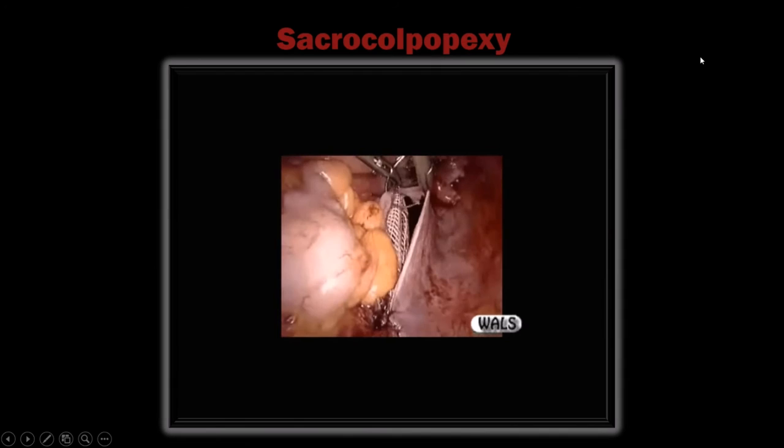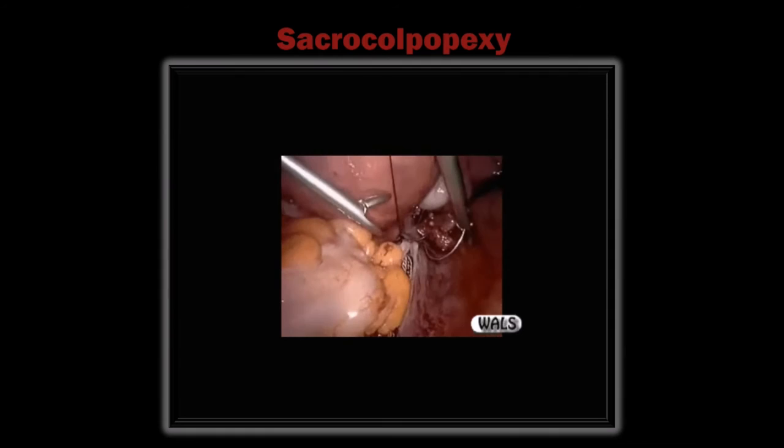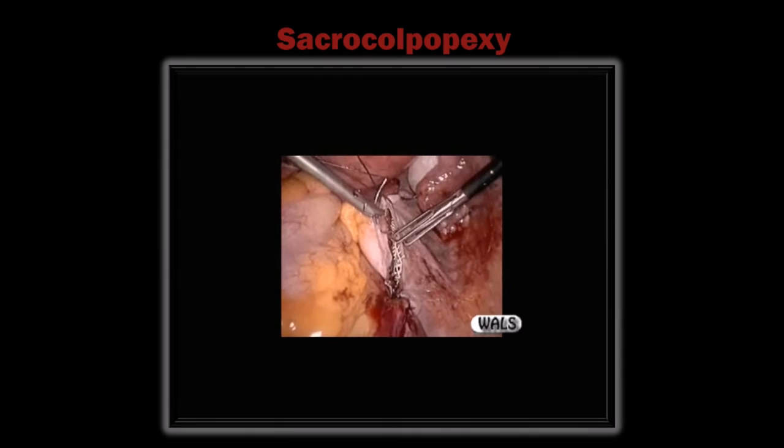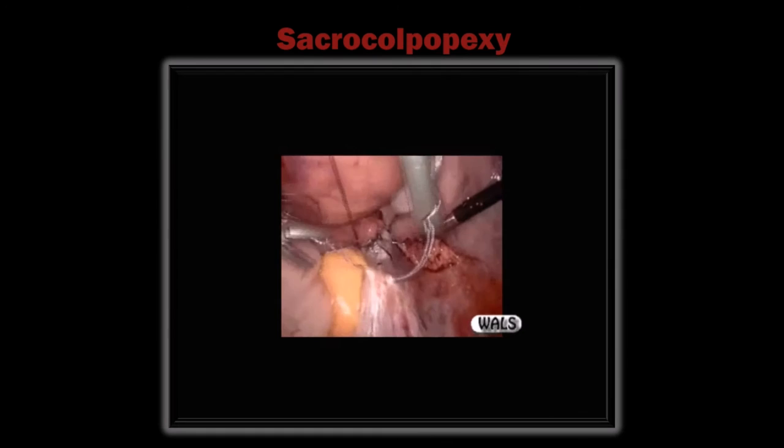Now a different video showing how to manage vault prolapse. In vault prolapse, the uterosacral ligament has been cut — there is no uterosacral ligament to fix mesh to and no cervix to encircle.